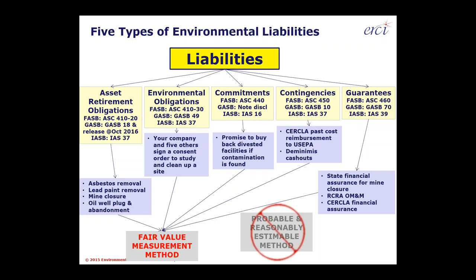Generally, when looking at due diligence, it's important to use the fair value measurement method. If you see numbers generated with the other method — probable and reasonably estimable — that method has its roots in FASB 5, a portion of GAAP that's since been superseded. That method dates back to 1975 and has been discredited for use in fair value measurement and in due diligence calculations.